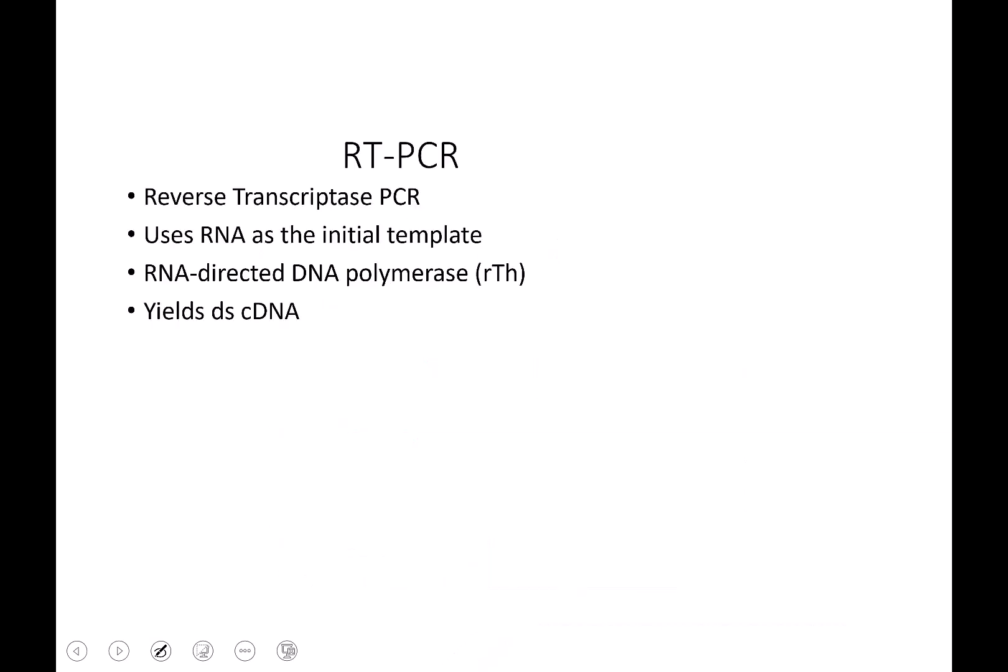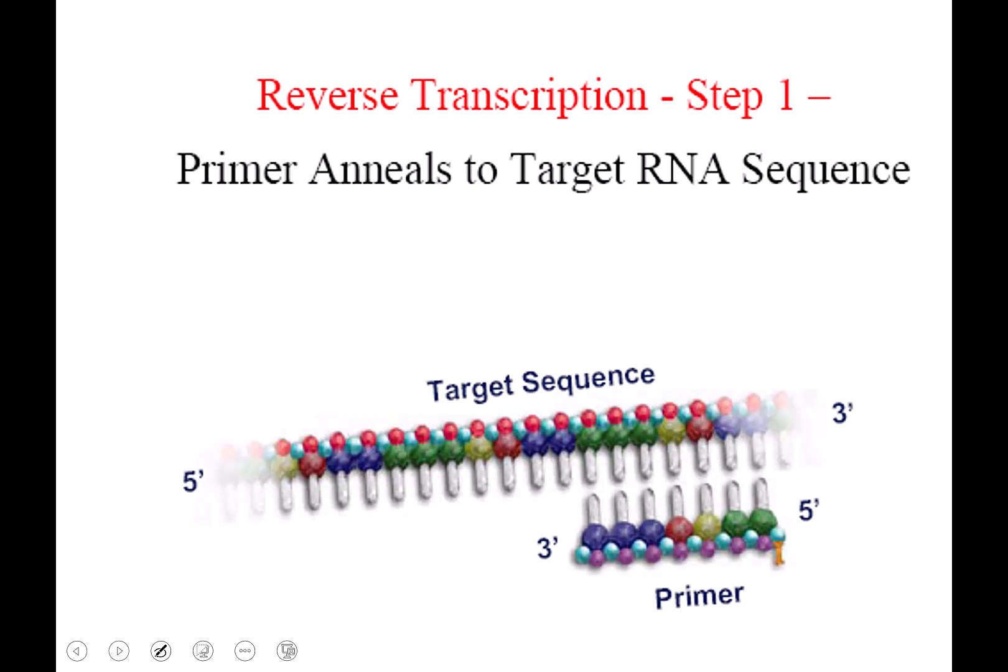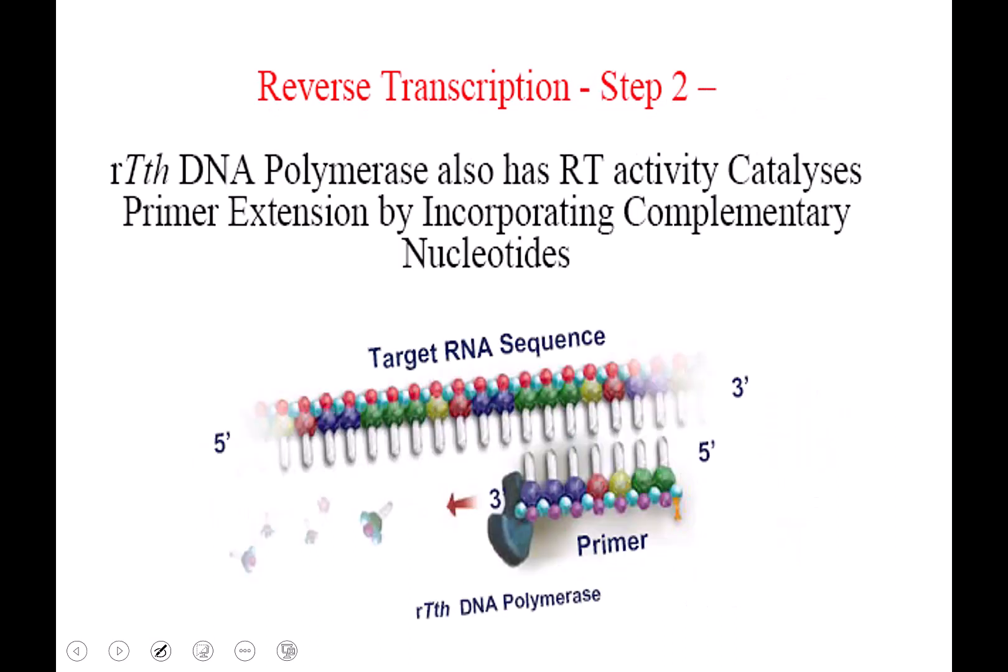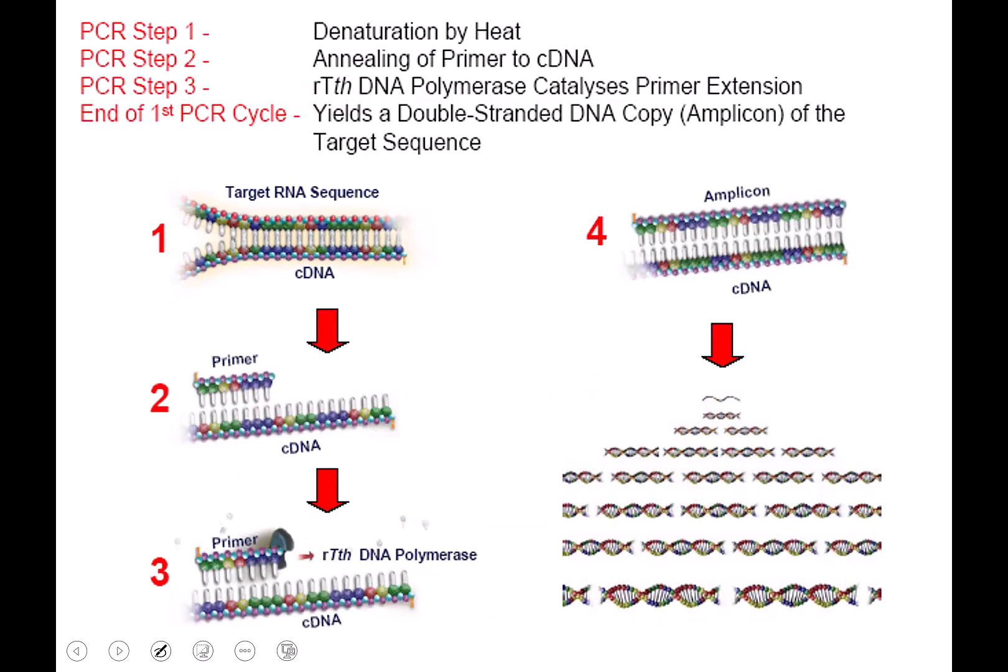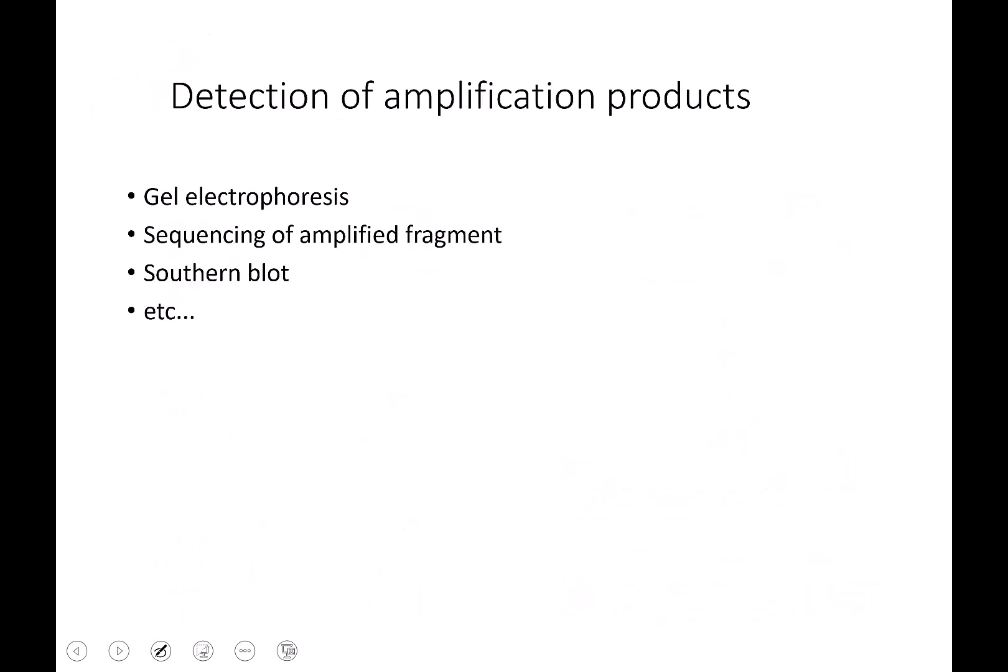So the other kind of PCR that's really interesting is reverse transcriptase PCR. So reverse transcriptase PCR uses RNA as the initial template, and you're going to end up with DNA. So instead of using DNA as a template, it uses RNA as a template. It's really the exact same thing. Primer anneals. It just has a different enzyme, which is the reverse transcriptase DNA polymerase. And then from that you end up getting your DNA.